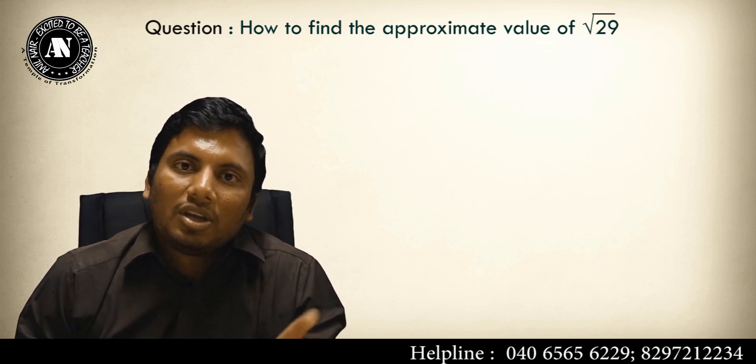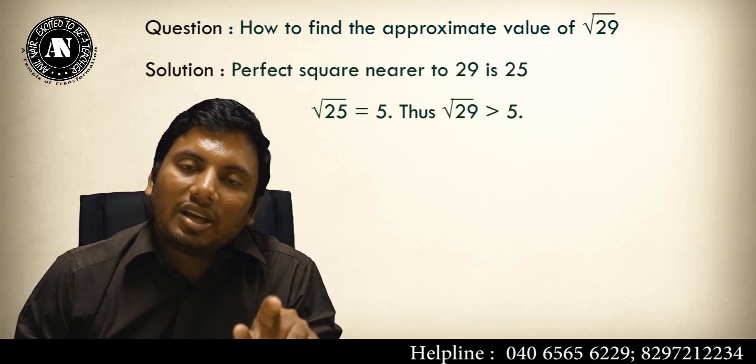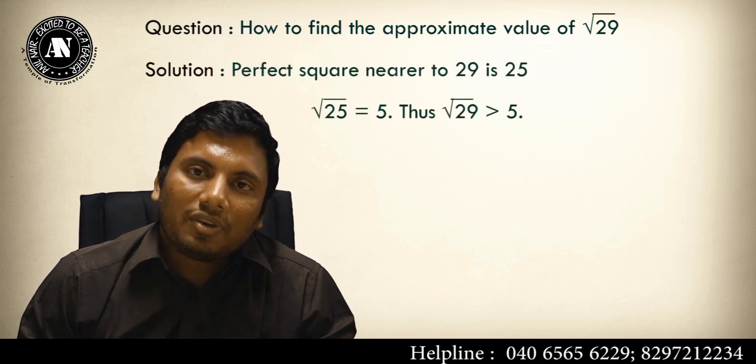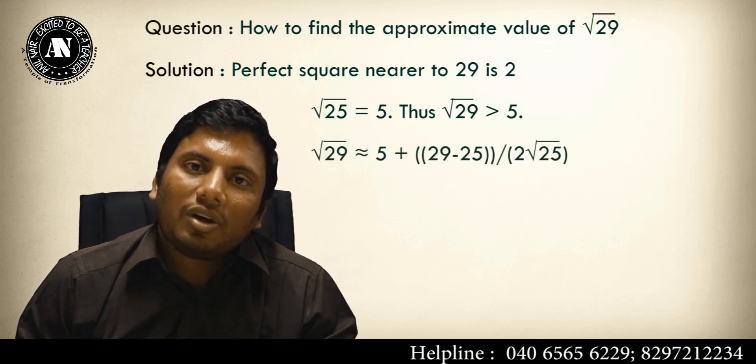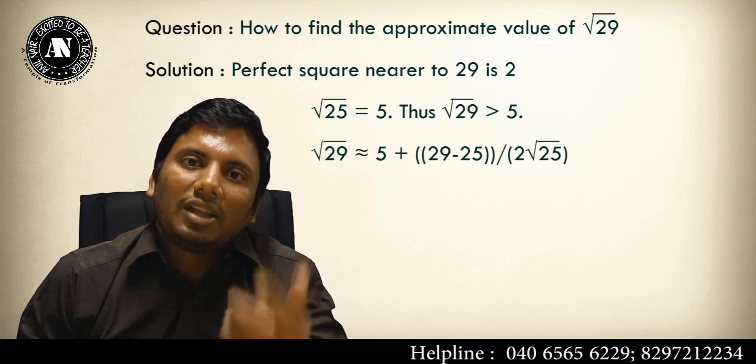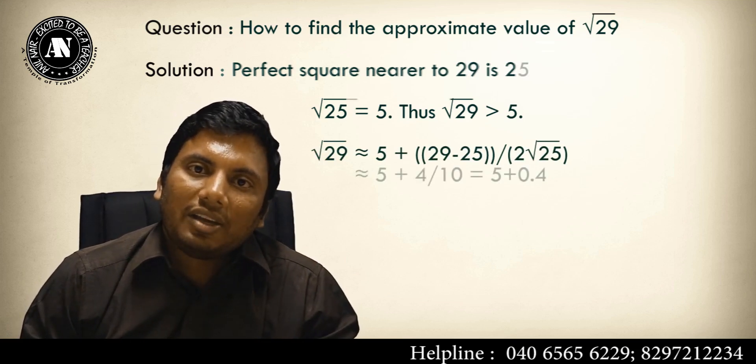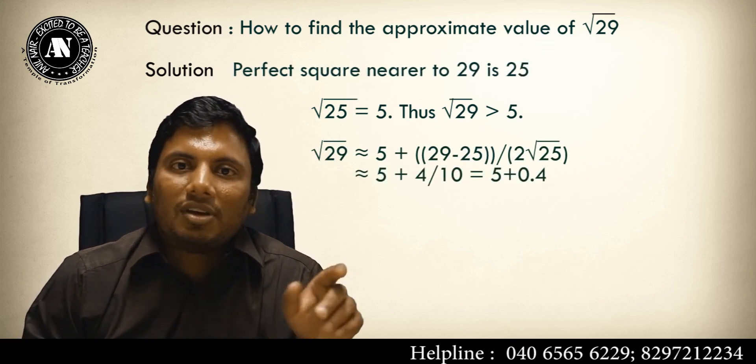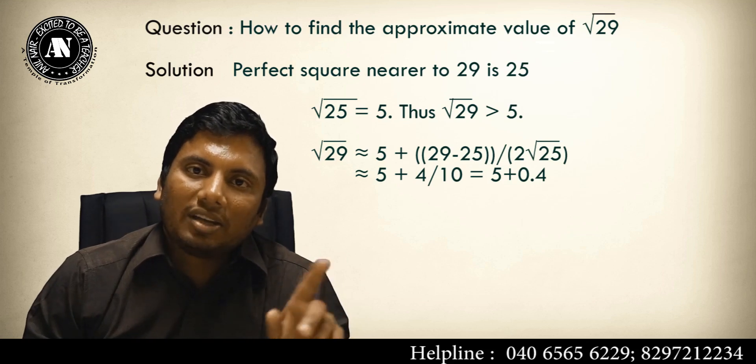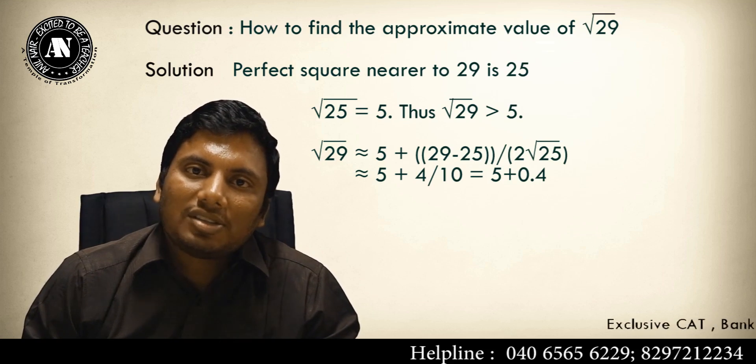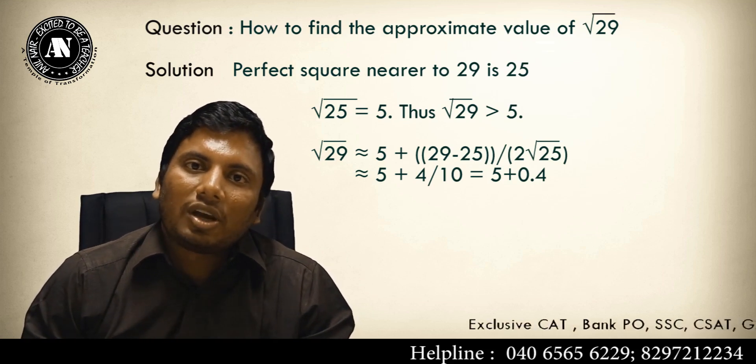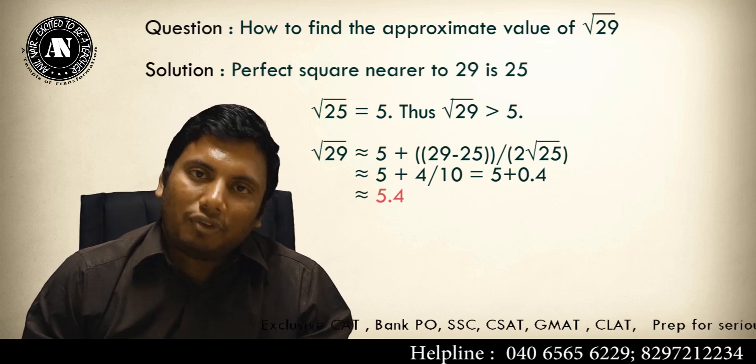Square root of 29, what is the nearest value nearer to square root of 29? Square root of 25, which is 5. 5 plus 29 minus 25, what is the difference? 4. Double that value. If you double that 5, what will be the value? 10. So answer will be 5 plus 4 by 10. What is 4 by 10? 2 by 5. 2 by 5 is 5.4, so square root of 29 is very very close to 5.4.